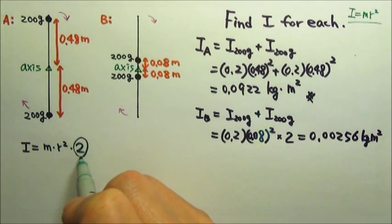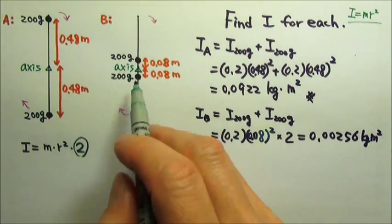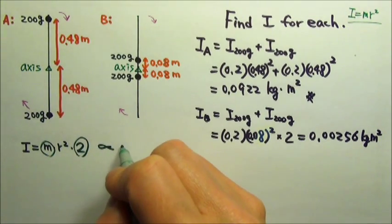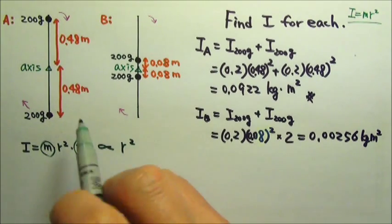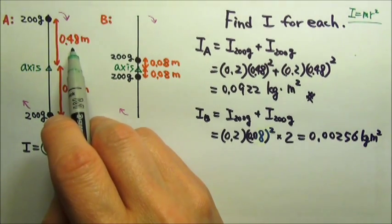Each one giving the same mr squared. And each m is also the same. So the I is proportional to r squared. This one has an r that's 0.48 meters.